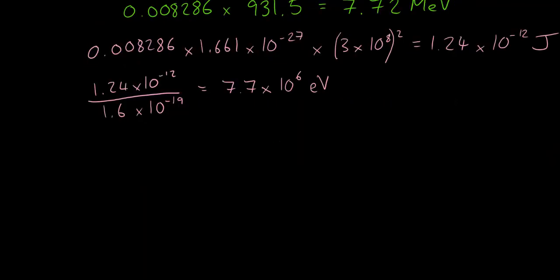Finally, to determine the binding energy per nucleon, we need to divide the binding energy, 7.7 mega electron volts, by the number of nucleons. Here this is a helium-3 atom, so it's 3 nucleons, 2 protons and 1 neutron. To give us our binding energy per nucleon of 2.6 mega electron volts, or 2.6 million electron volts per nucleon.